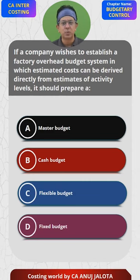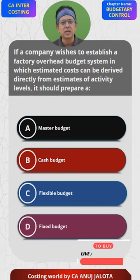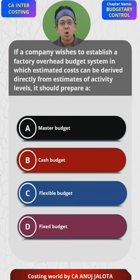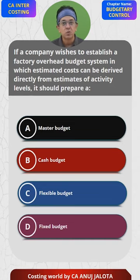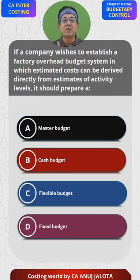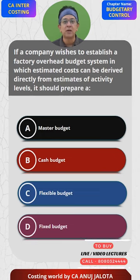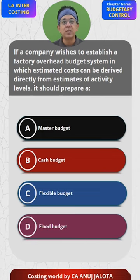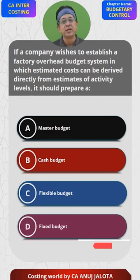For example, I thought that I am going to be producing 1 lakh units in this year, but then I thought if the demand is higher, I will be making 1 lakh 10, or 1 lakh 20, or 1 lakh 30, or if the demand is not very high, I could be making 90,000. Therefore, I try to prepare budgets for each and every level of activity. In reality, whenever I will do the production, I exactly know that for this much level of activity, this will be my overheads. For this level, this will be my overheads and so on.